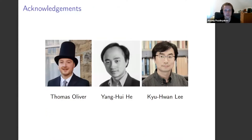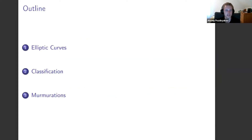I want to quickly thank my co-authors Tom, Yan, and Qi-Huan, who not only co-authored this paper but also had prior work establishing the idea of using machine learning to study arithmetic objects. I also want to thank Tom and Yan for organizing this event, and Qi-Huan for introducing me to this area of research. The plan is to first talk about elliptic curves and relevant theorems and conjectures, then bring in machine learning to classify elliptic curves, and then that should lead us into murmurations.